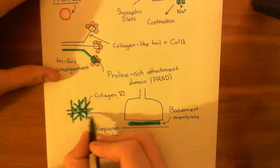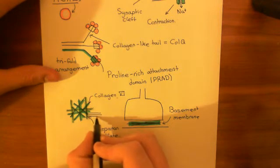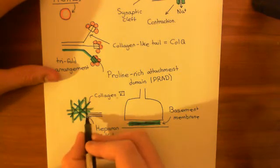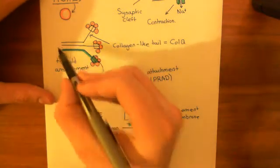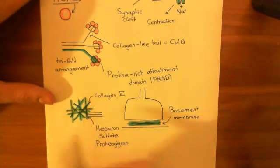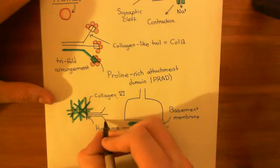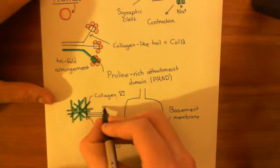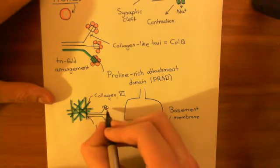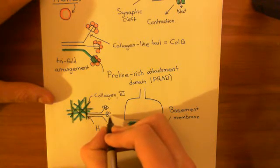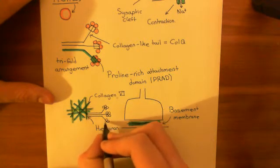So let's just draw a miniature one of these out here. So here is our ColQ tail attached at this end down here to the proteoglycan, to the heparan sulfate proteoglycan. And then off at the head, what you've then got is these acetylcholinesterase enzymes, these tetramers of acetylcholinesterase enzymes coming off.